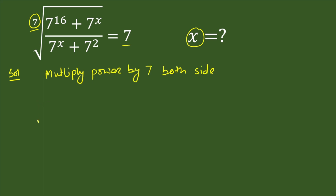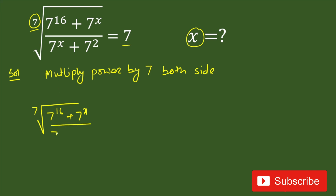So in the square root we have (7 power 16 plus 7 power x) divided by (7 power x plus 7 squared), equal to 7. We multiply by power 7 on both sides — on the left hand side it is power 7, and on the right hand side it is 7 power 7.